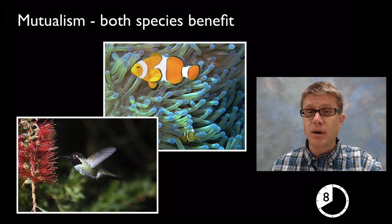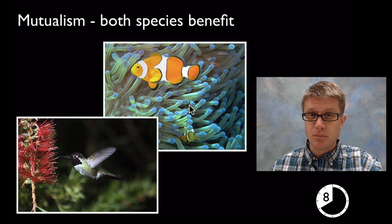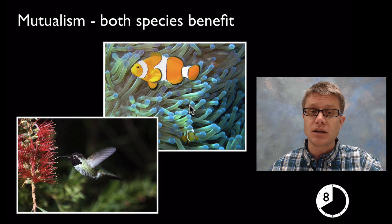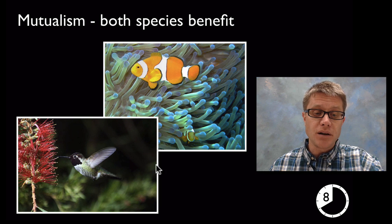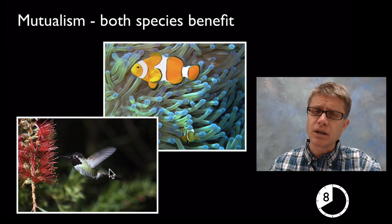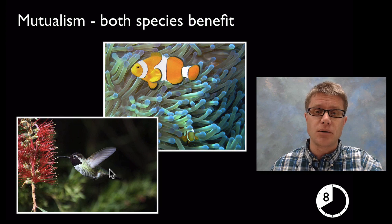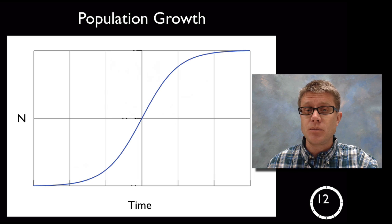Mutualism is where both organisms benefit. A familiar example is the clownfish in the sea anemone — the clownfish is immune to the anemone's toxins, keeps things away, and brings food toward the anemone. Pollination is another example: a hummingbird gets nectar from the flower and in return pollinates it. These are all interactions at the level of a community.